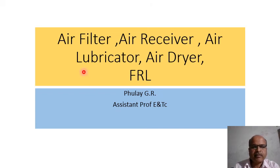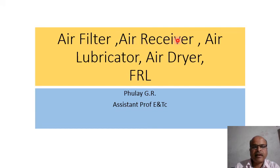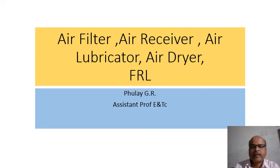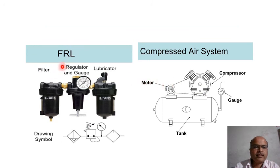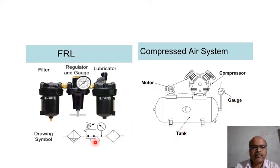Hello students, in this lecture we will study air filter, air receiver, air lubricator, air dryer. This air filter, receiver and lubricator are combinedly known as FRL unit. This is a combination of filter, regulator and gauge, and this is a lubricator. This is a compressed air system showing motor, compressor, gauge and tank, and this is the drawing symbol of the FRL unit.